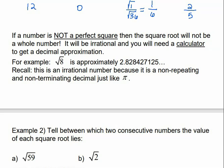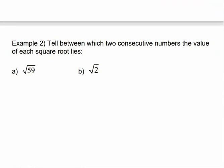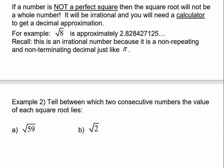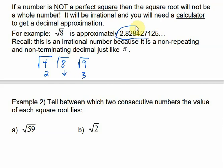Since we are not allowed to use calculators in this course, I won't be asking you to give me a decimal approximation, but you may be asked to tell between which two consecutive numbers the value of the square root lies. With 8, if we think about the perfect squares close to 8 — 4 is a perfect square and 9 is a perfect square. The square root of 4 is 2, and the square root of 9 is 3. So the square root of 8 lies between 2 and 3, and that's why it's 2.8 and keeps going.